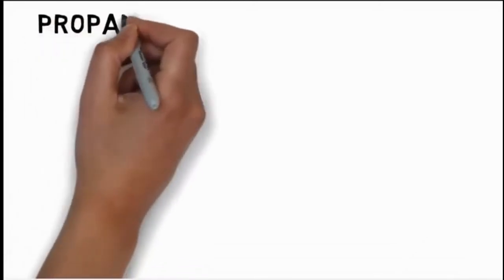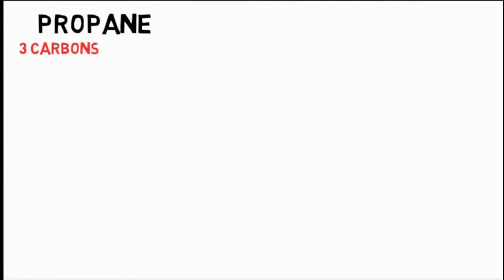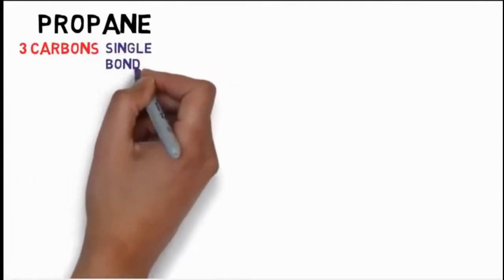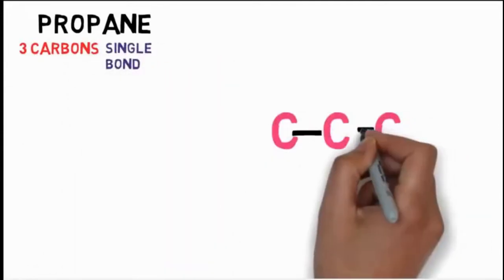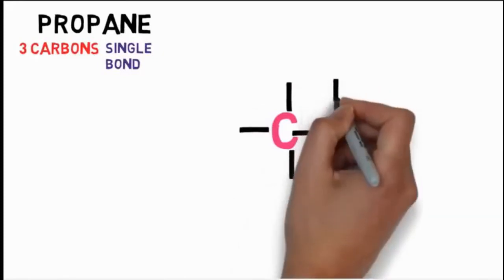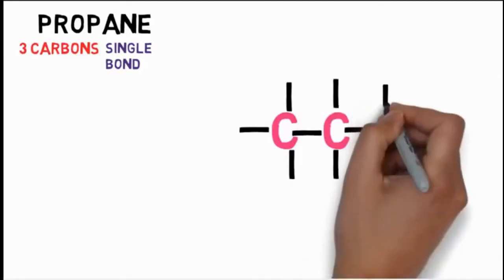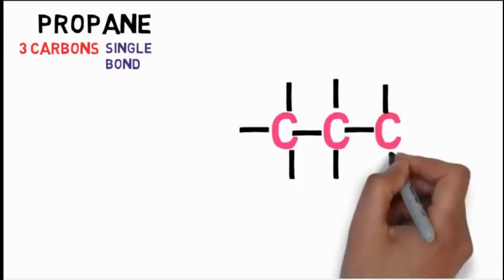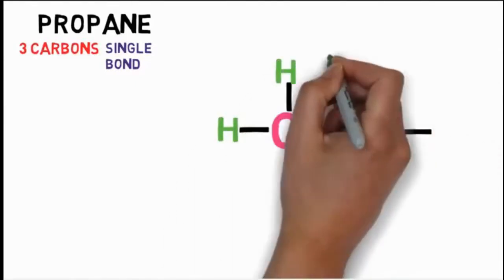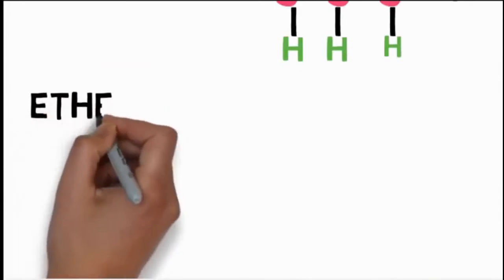Propane: it has prefix 'prop' meaning 3 carbons, and 'ane' means carbon-carbon single bond. Insert single bonds between each carbon pair. The first carbon has one bond done and 3 remain; the next carbon has two bonds and two remain; the last carbon has one bond so we need to add 3 more. Add hydrogen to each bond. This is our propane ready.